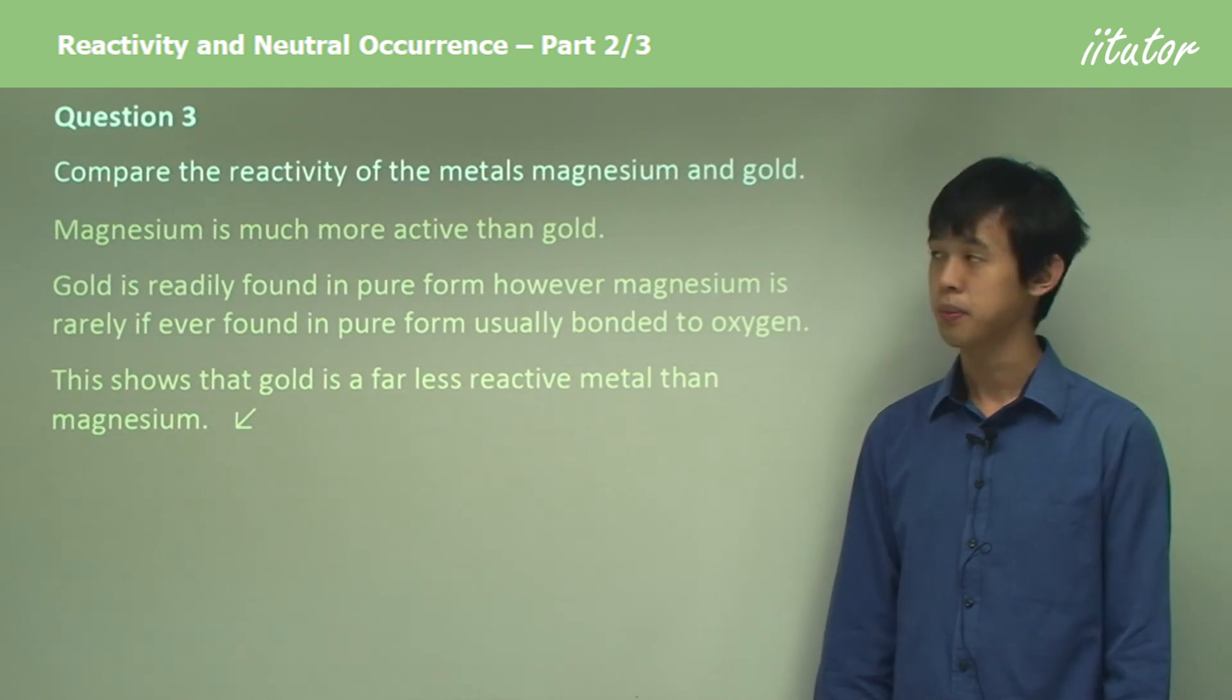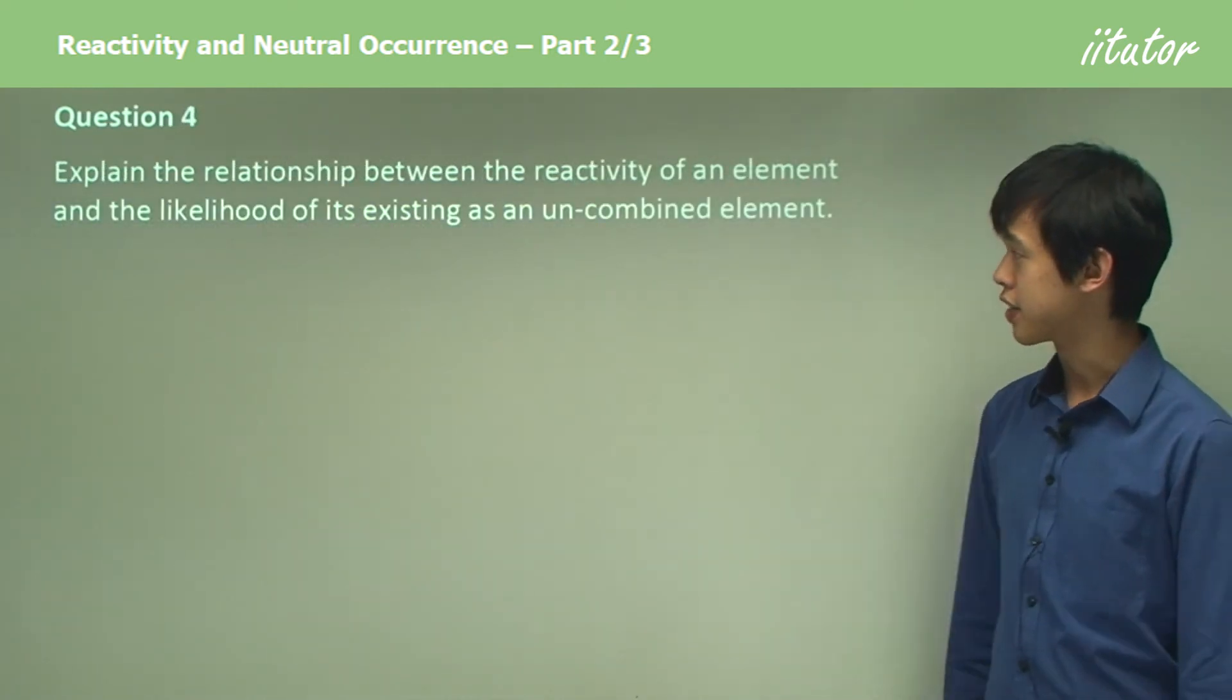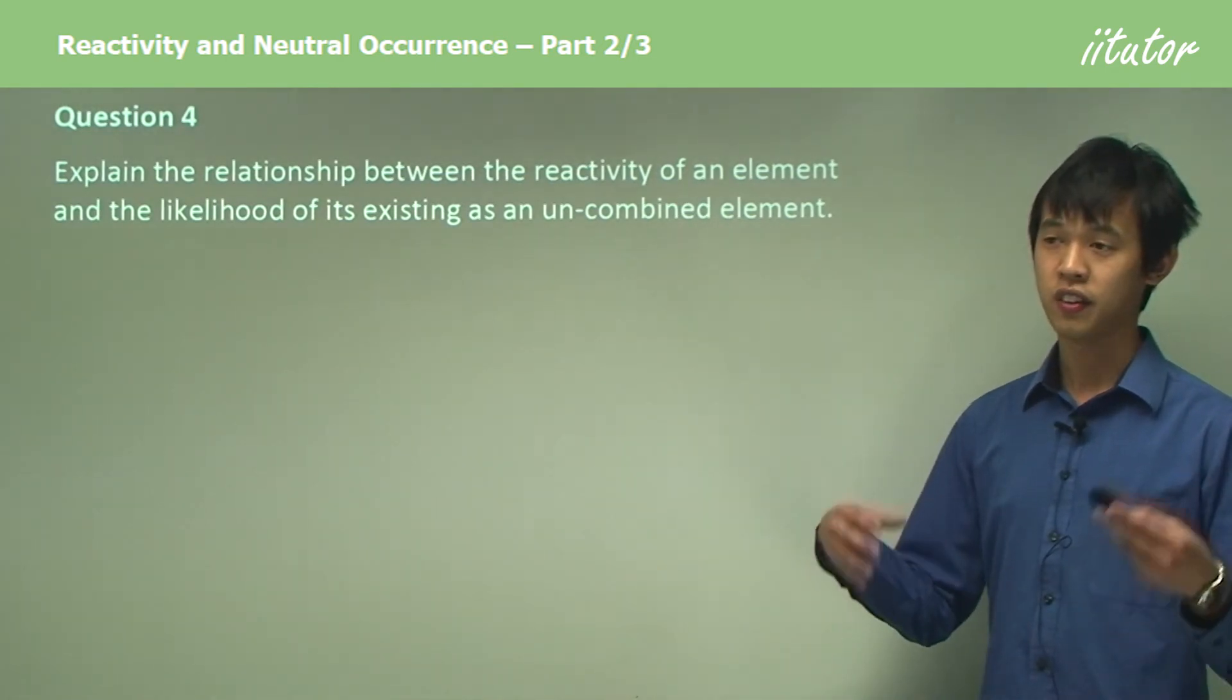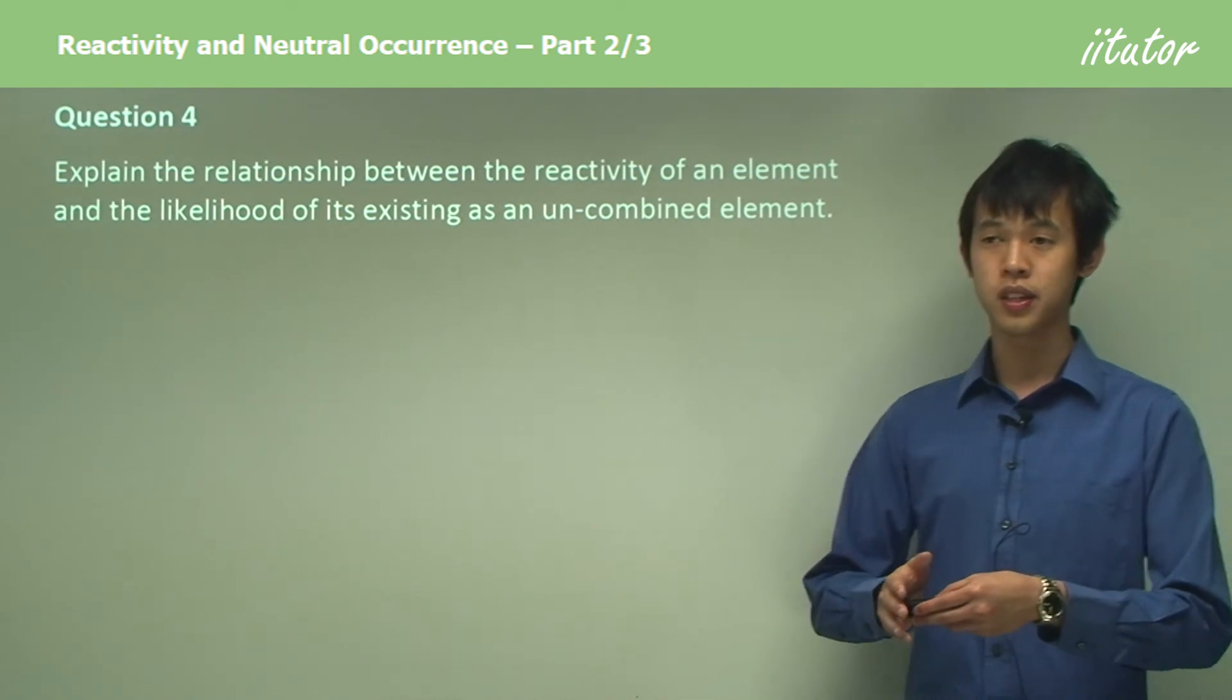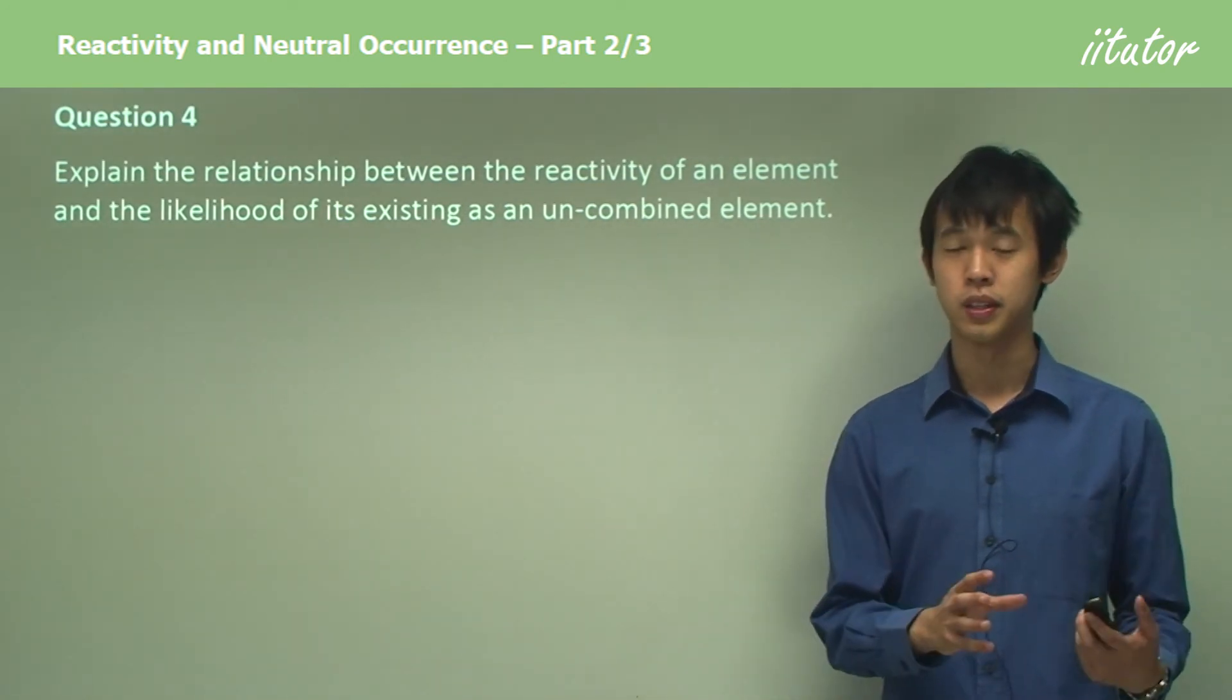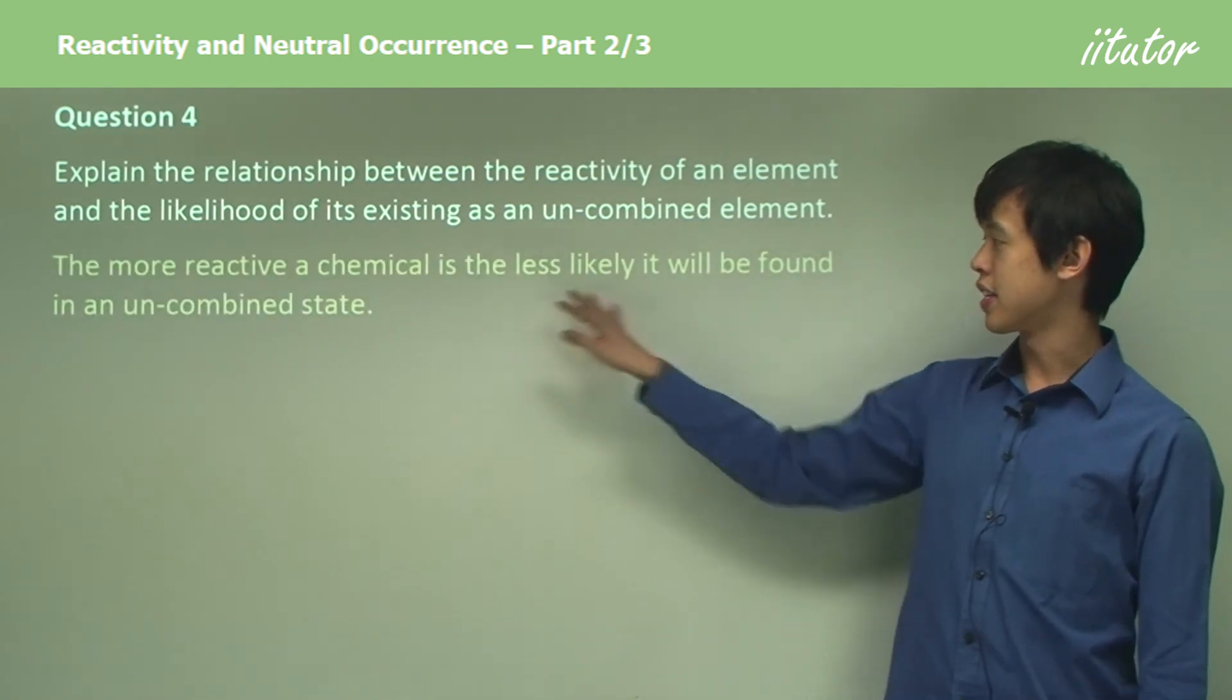Explain the relationship between the reactivity of an element and the likelihood of its existing as an uncombined element. Is the reactivity of an element related to how likely we are to find that element in pure form? The more reactive a chemical is, the less likely we will find it in an uncombined state.